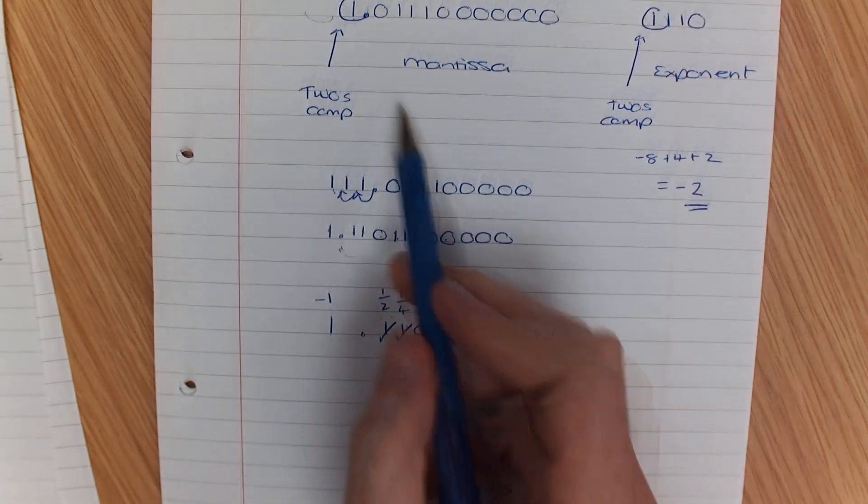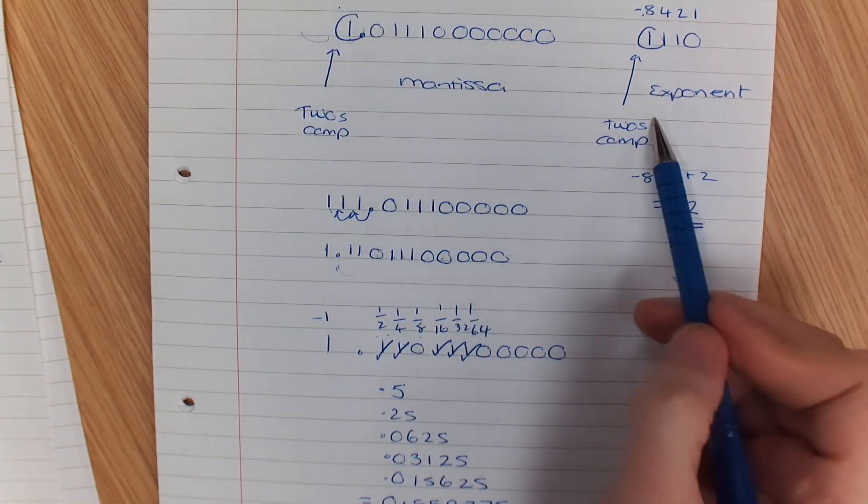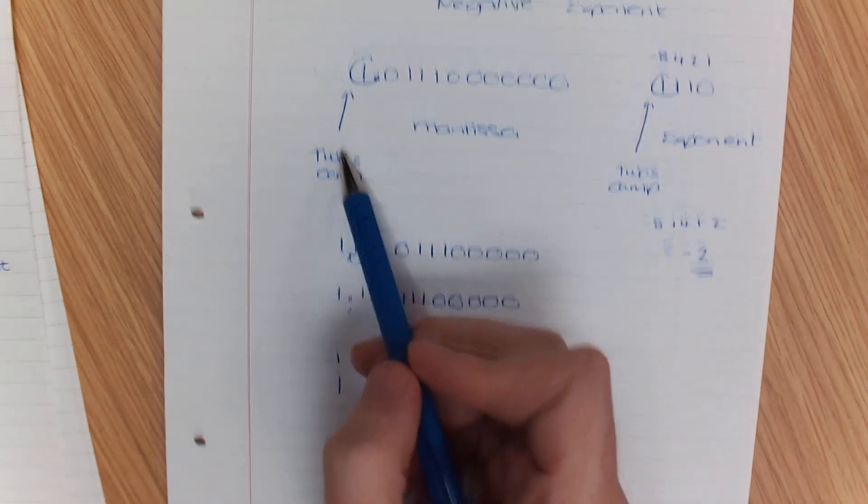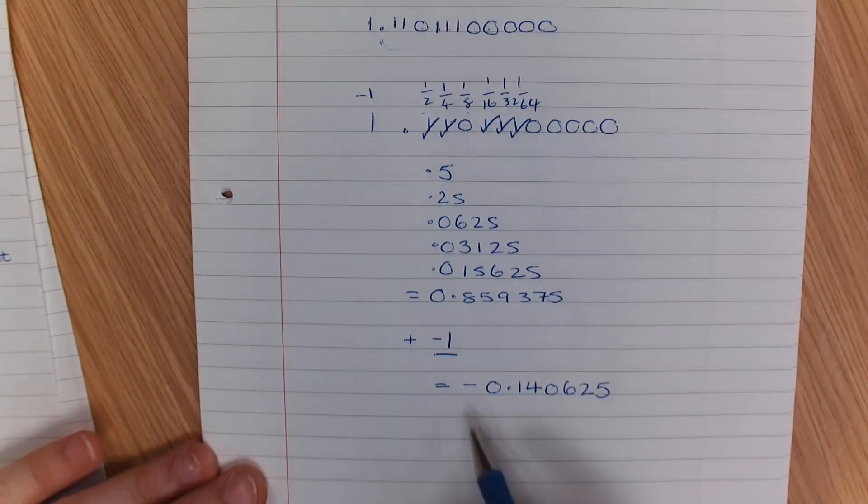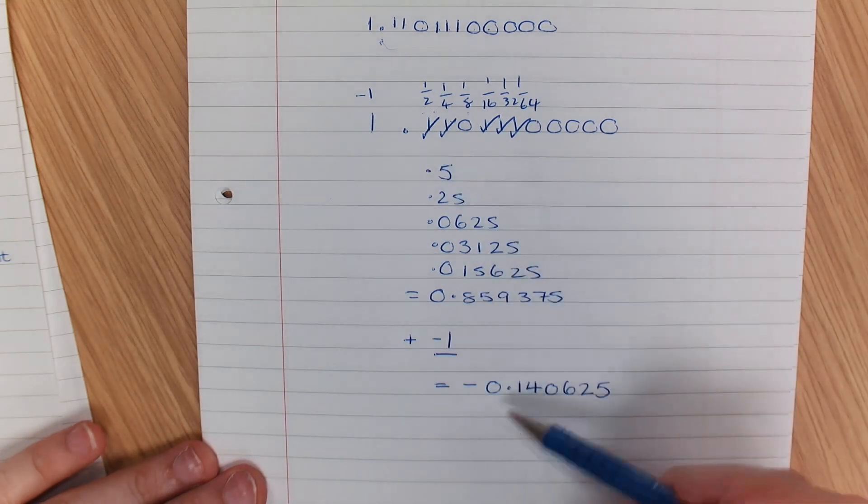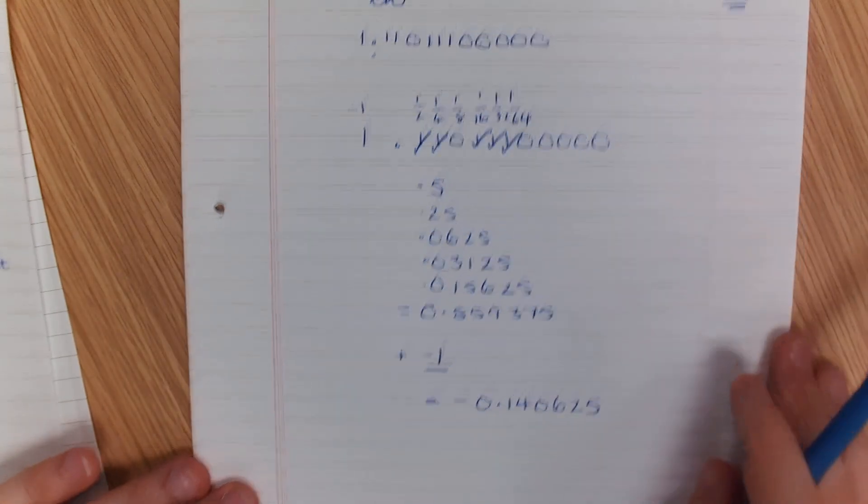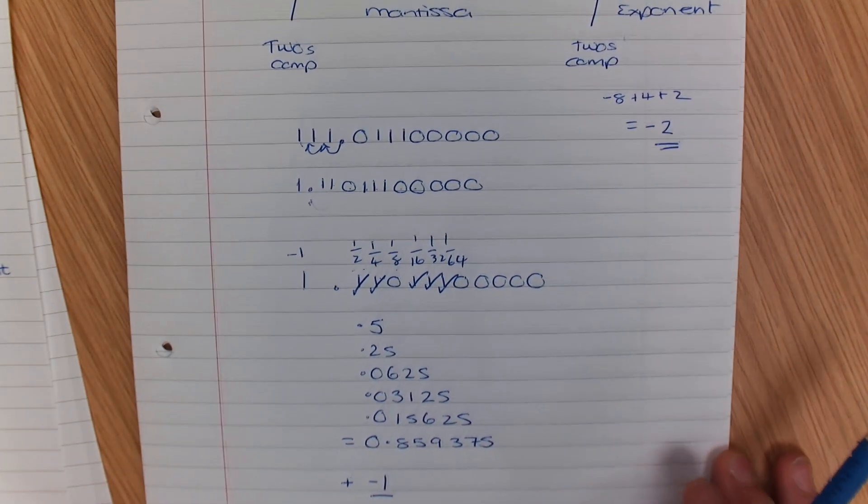So that is how you work out a negative exponent and a negative mantissa. So watch that back and see if you can apply that technique to any similar questions that you may have worked on. Good luck.